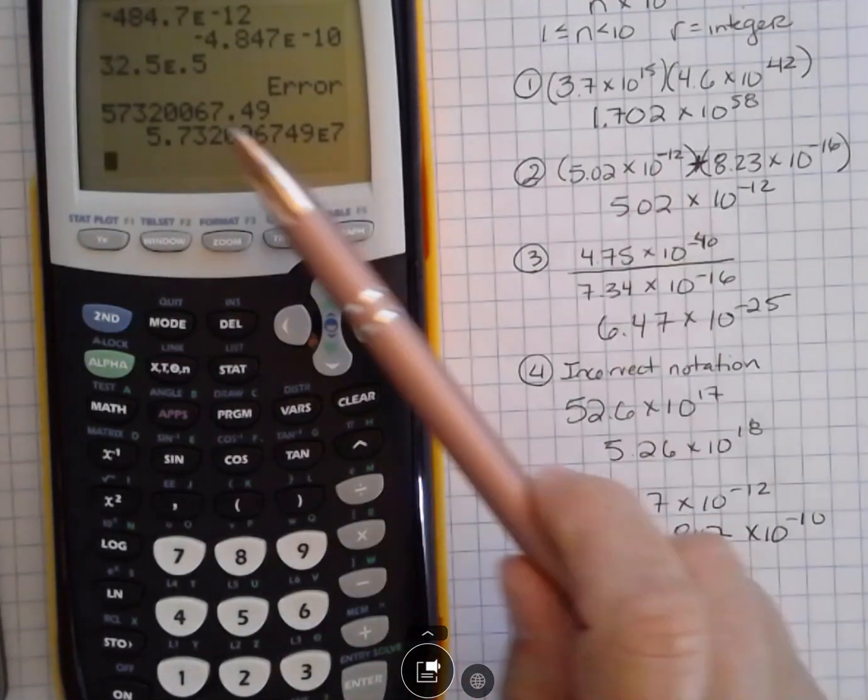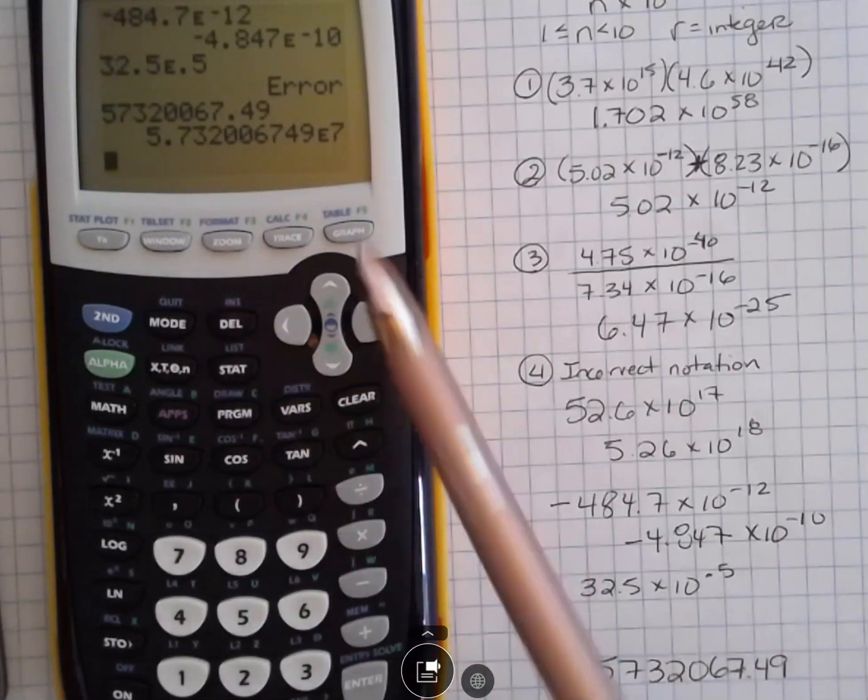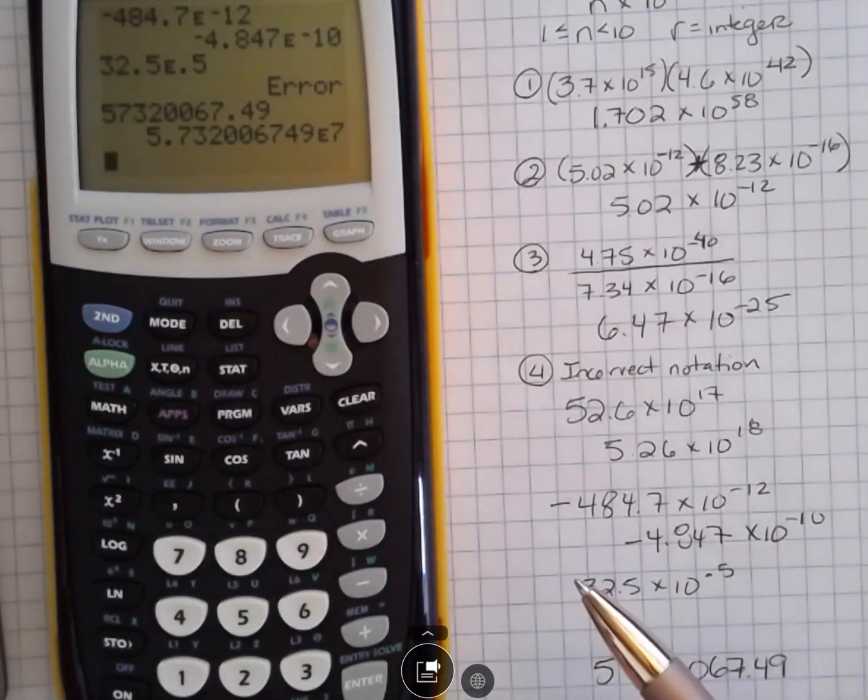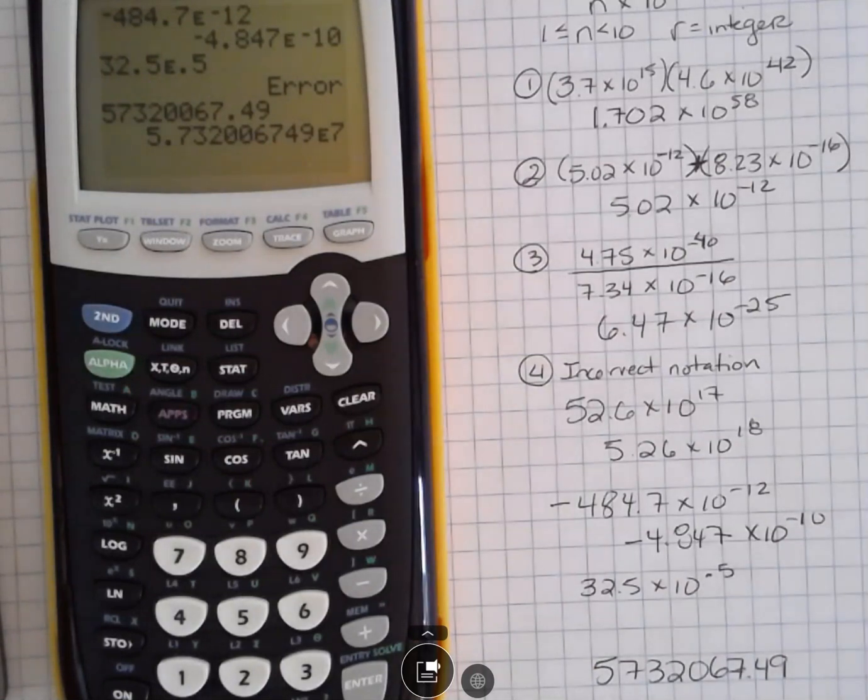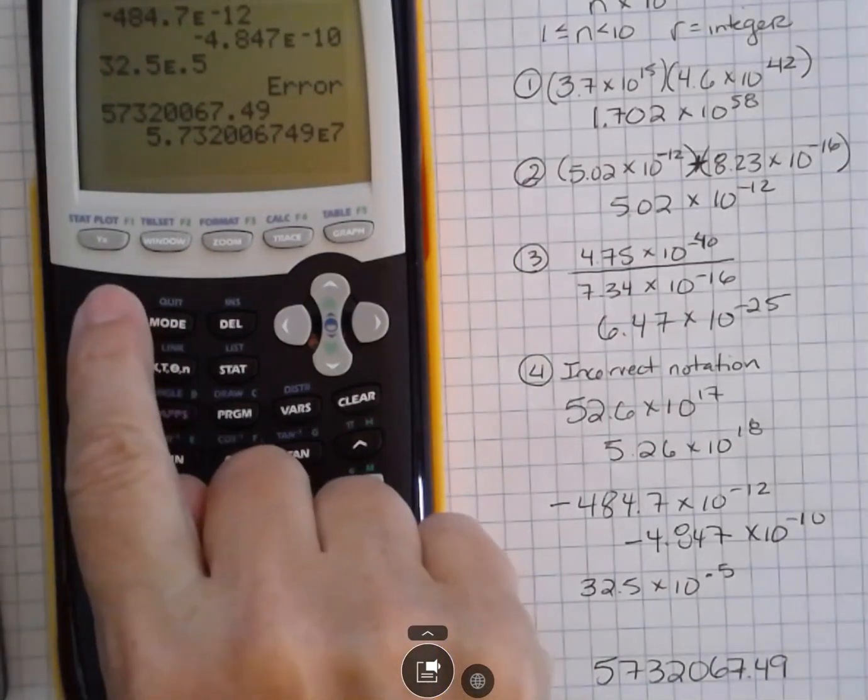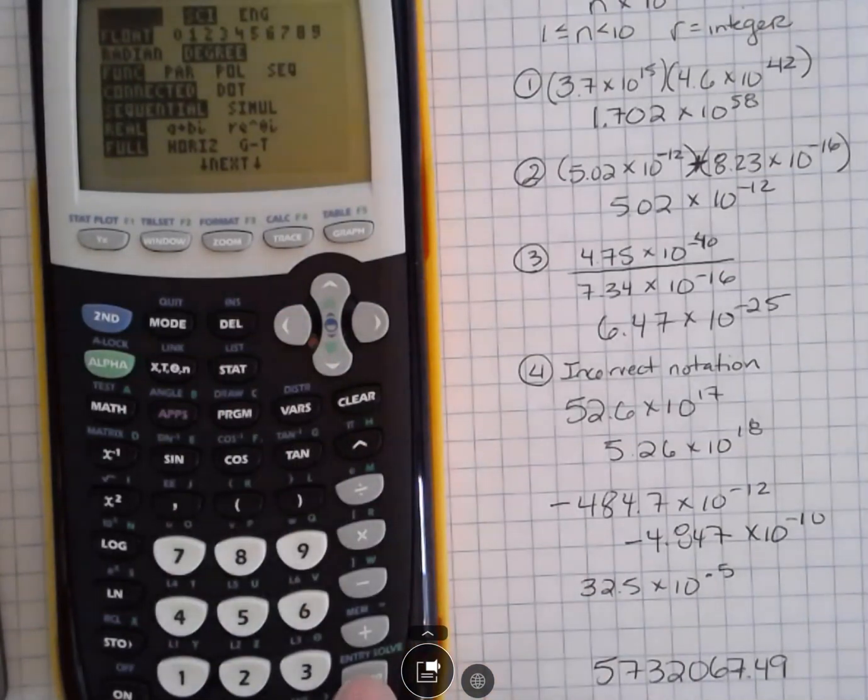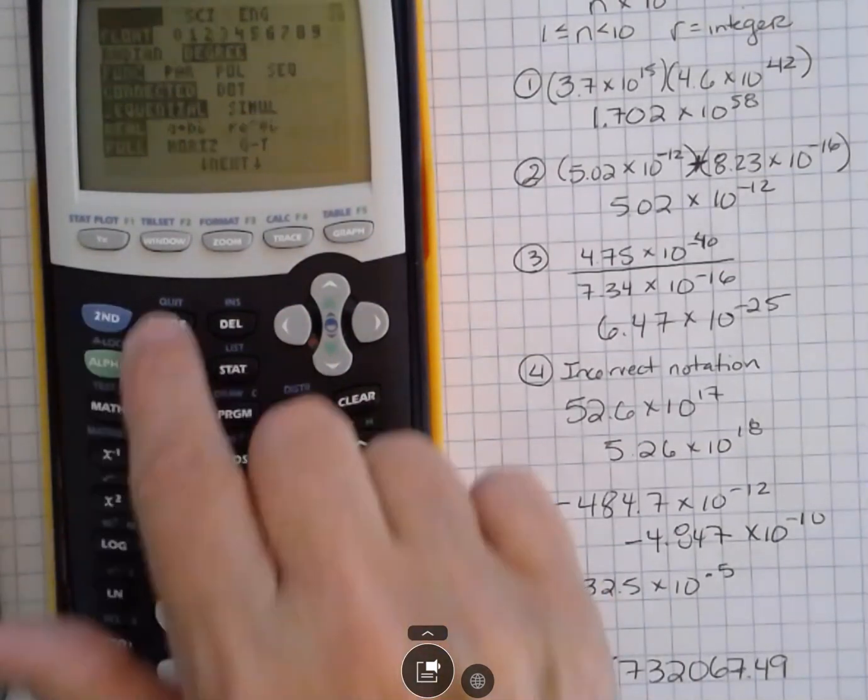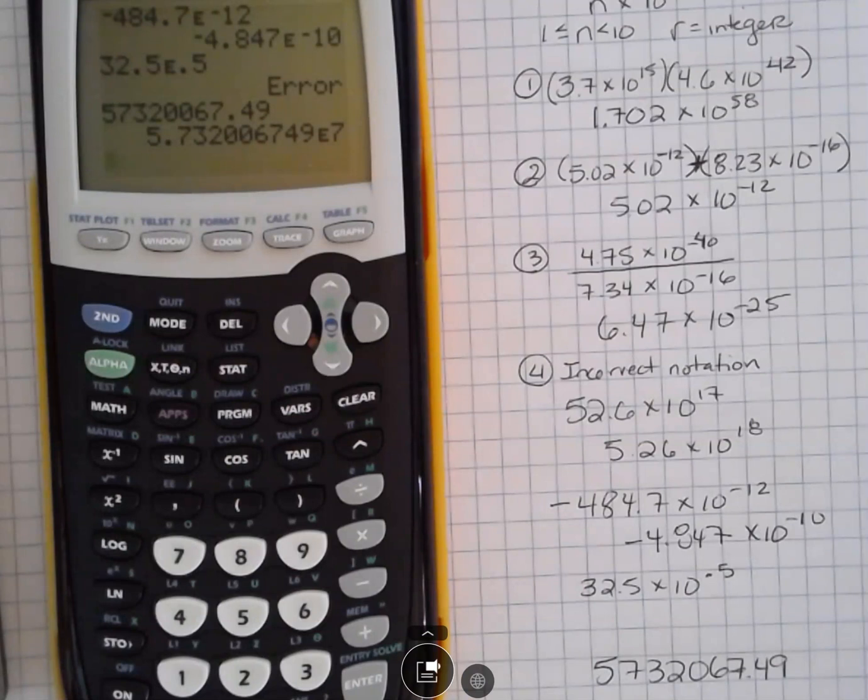And all of a sudden, that number that you had is going to show you what the scientific notation form of that is if you needed to change that. Remember, though, if you do that, then go ahead and put your calculator back into normal mode after you've done that if you just wanted to know that one number. You don't want to spend a bunch of time in scientific notation accidentally. All right, that's it for this one. I hope you have a great day.